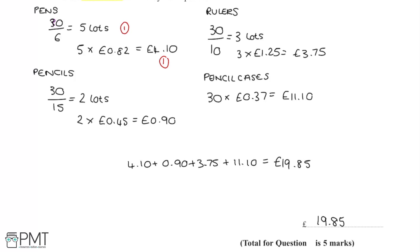And then the third mark is going to be for using this process to find the cost of two of the 30 pens, pencils or rulers, so any two of these. So once I'd worked out the pencils, that got me the third mark.